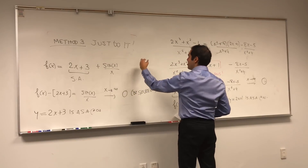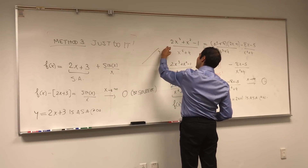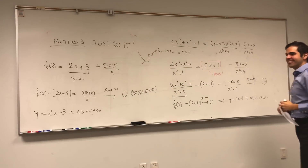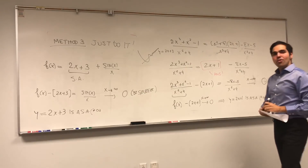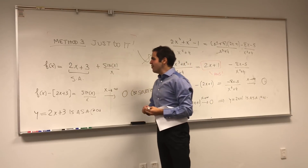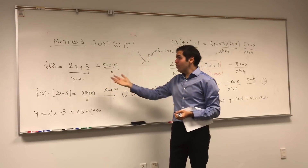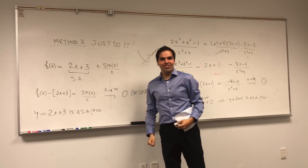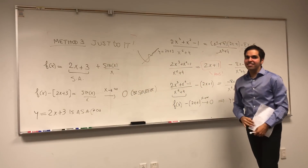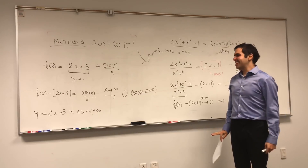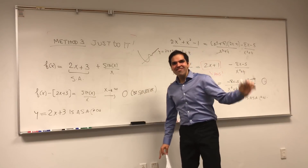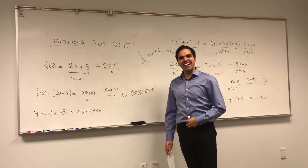This function, which looks a bit squiggly, approaches the line y = 2x + 3. By the way, there's nothing that says you can't consider more general geometric objects. Here we have slant asymptotes, which are lines, but you could also have slant parabolas — meaning the function eventually approaches a parabola — and the methods are exactly the same. If you like calculus and would like to see more math, please subscribe to my channel. Thank you very much.